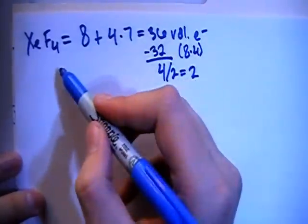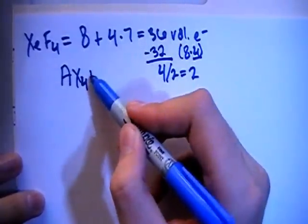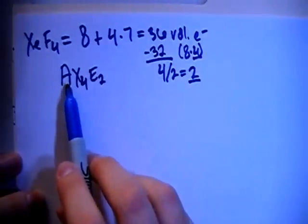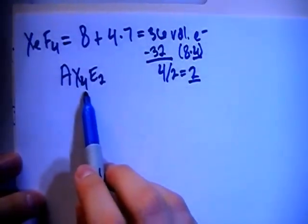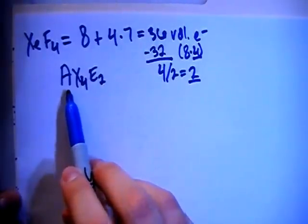So that means that this is going to be an AX4. This 4 comes from this 4 here. E2, this 2 here. Meaning that there's going to be a central atom, 4 surrounding atoms. This is where the 4 is. And then there's going to be 2 non-bonding electron pairs on the central atom.